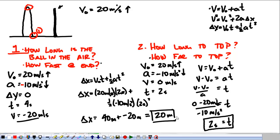Those are two examples of freefall problems. The third type is where you drop an object — in that case the initial velocity is zero, but you solve it exactly the same way as all of these. We're going to work on some freefall problems today and tomorrow in class. It's going to be very exciting.